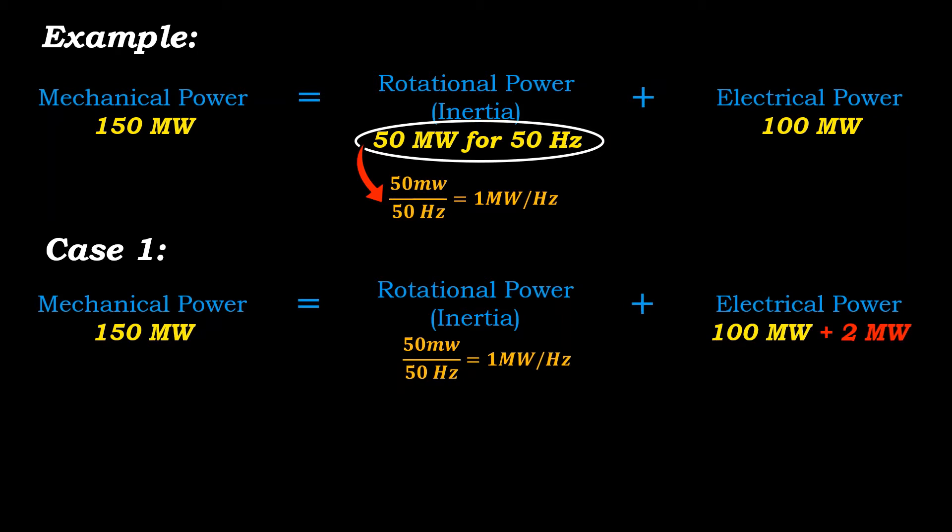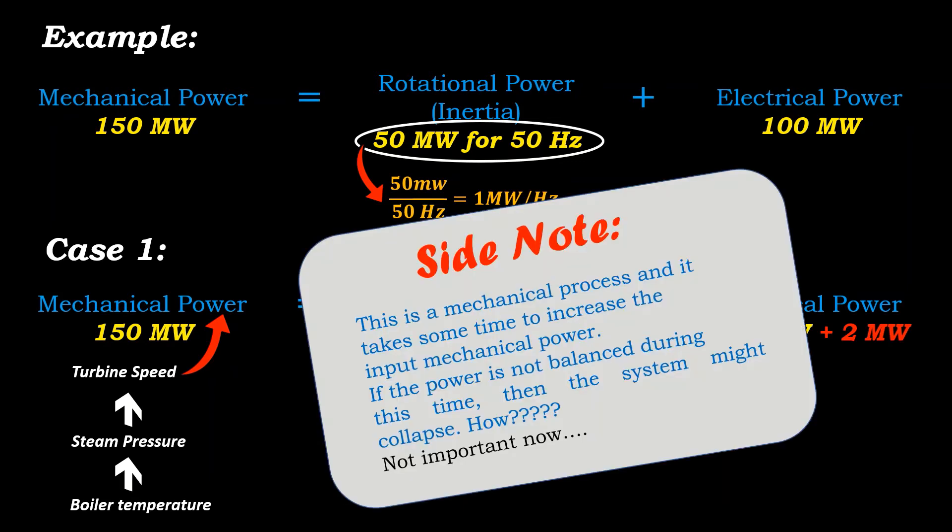However, increasing the mechanical input power is a time-taking process and cannot be done instantaneously. For that, initially we increase boiler temperature, this increases steam pressure which increases turbine speed and eventually input rotor mechanical power increases. During this whole process, if power is not balanced then it might collapse the system.